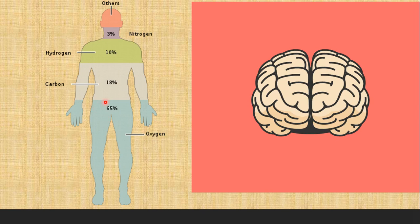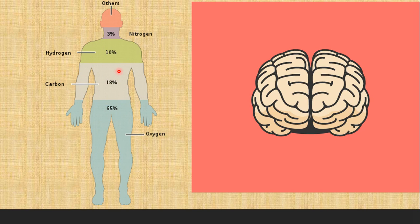Looking at the human body — have you ever wondered what you are made of from an elements point of view, not like heart and lungs, but from the elements? If you look at this body I've drawn here, oxygen takes up 65% of your body. There are 16 elements that make up your body, and six of them account for 98.5%. Oxygen takes up 65% and carbon takes up 18%.